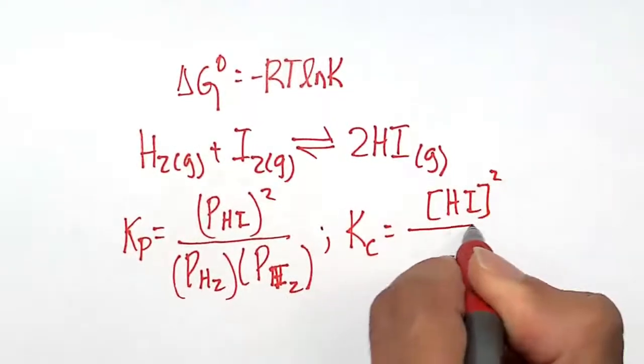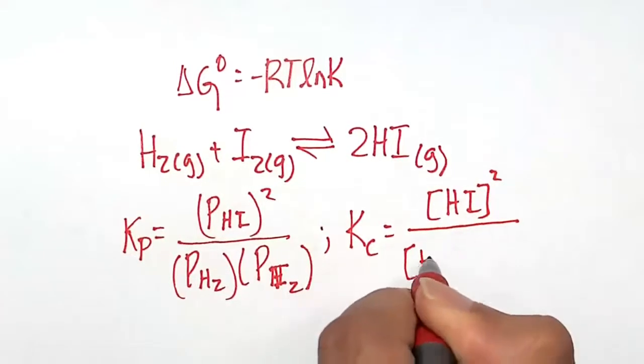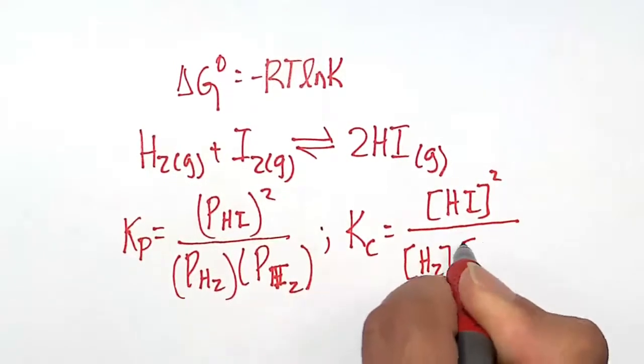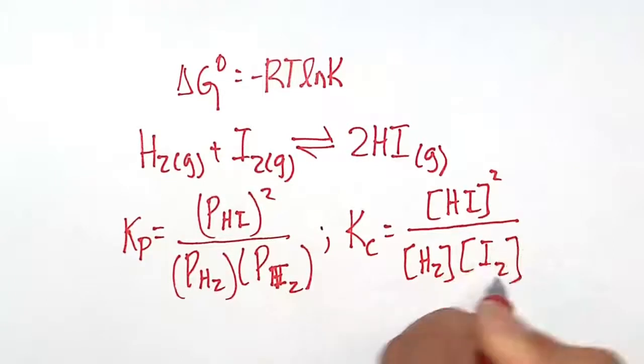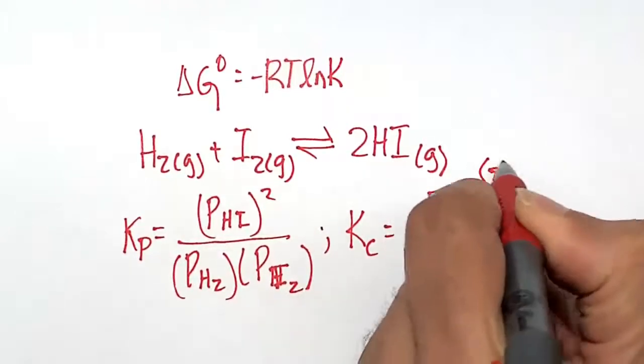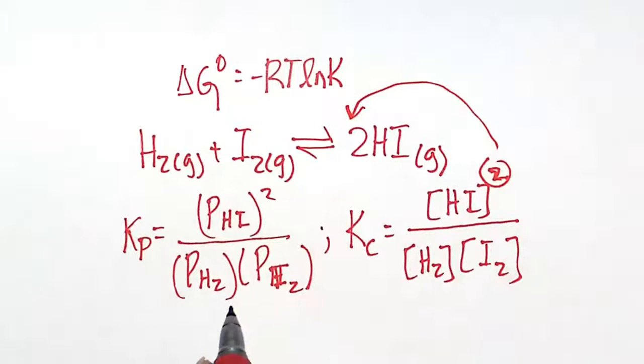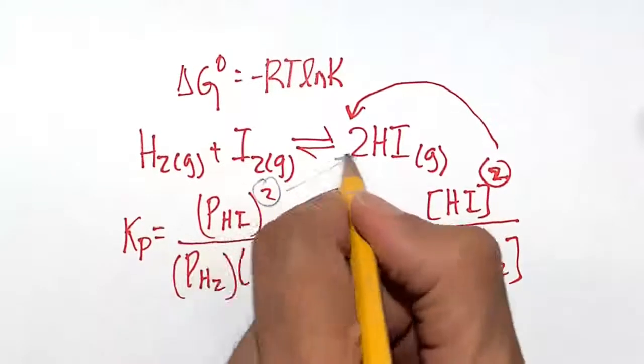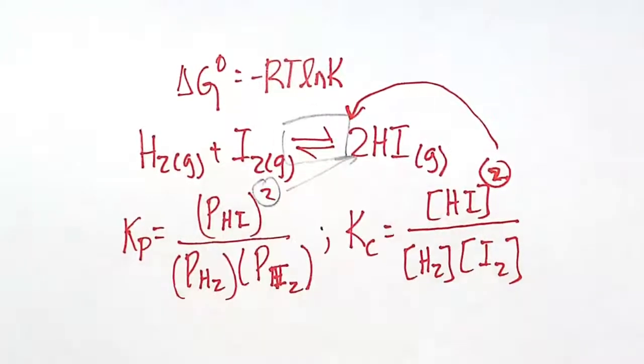Remember, gases can exert a pressure. They could also be expressed in moles per liter, and that is a concentration. Again, don't forget where this square comes from. It comes from the fact that we have two moles in the reaction. That is the essential definition of law of mass action for an equilibrium reaction.